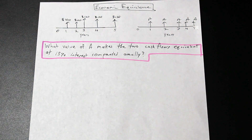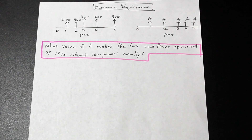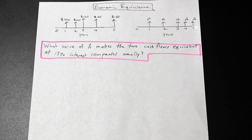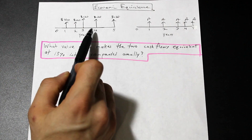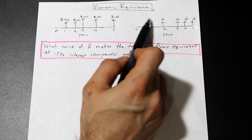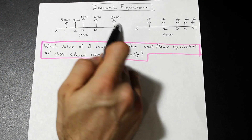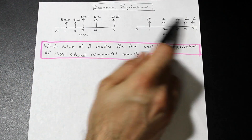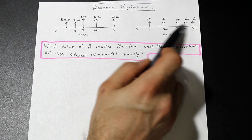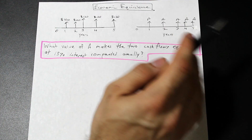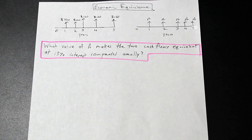Hey guys, welcome back. Fred here at Math and Engineering. This is going to be a quick video on economic equivalence. This is a pretty basic concept you're going to encounter in the first half of engineering economics. You're going to be asked to find the value of A that makes one cash flow equivalent to another — we have a series of payments on each side, and we want to make both equal.